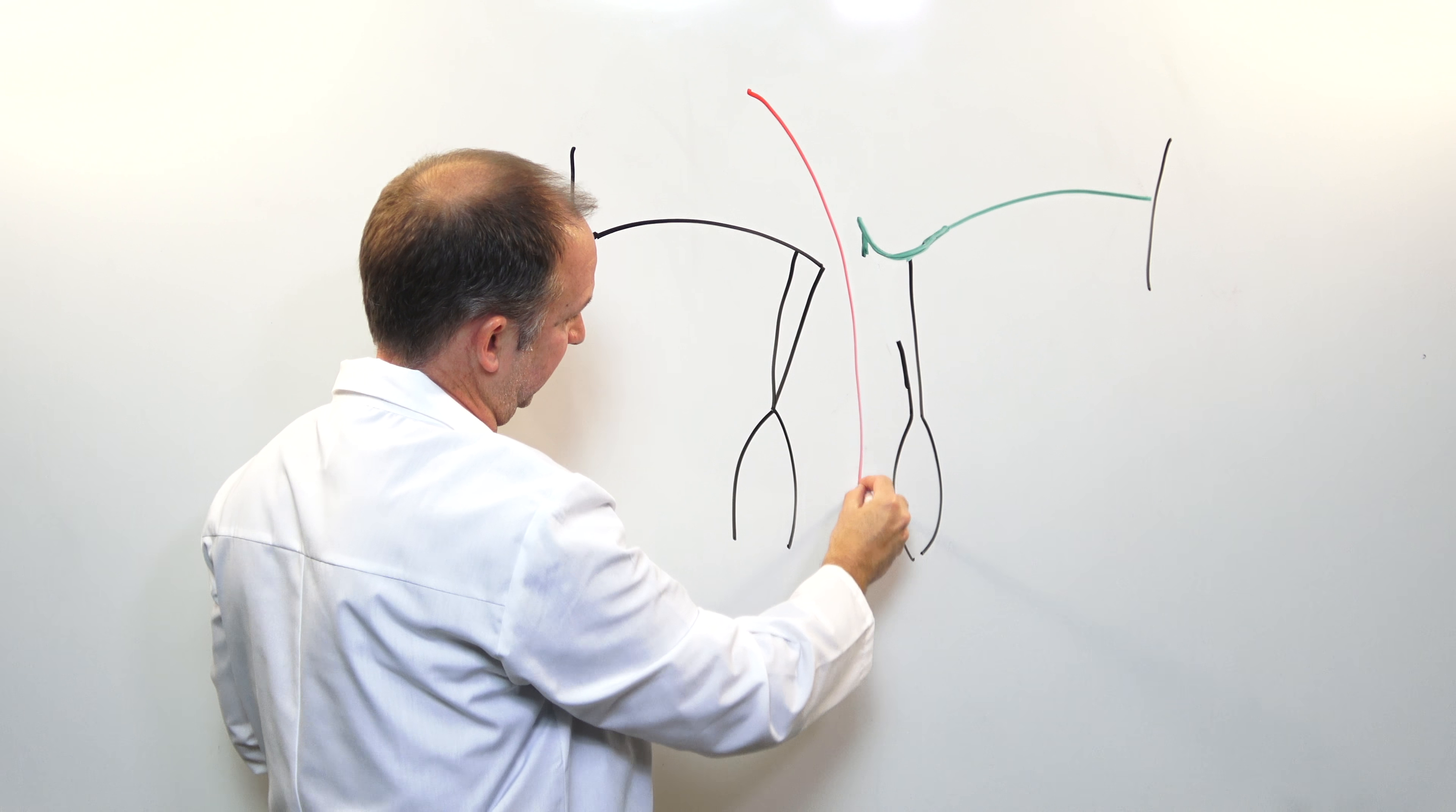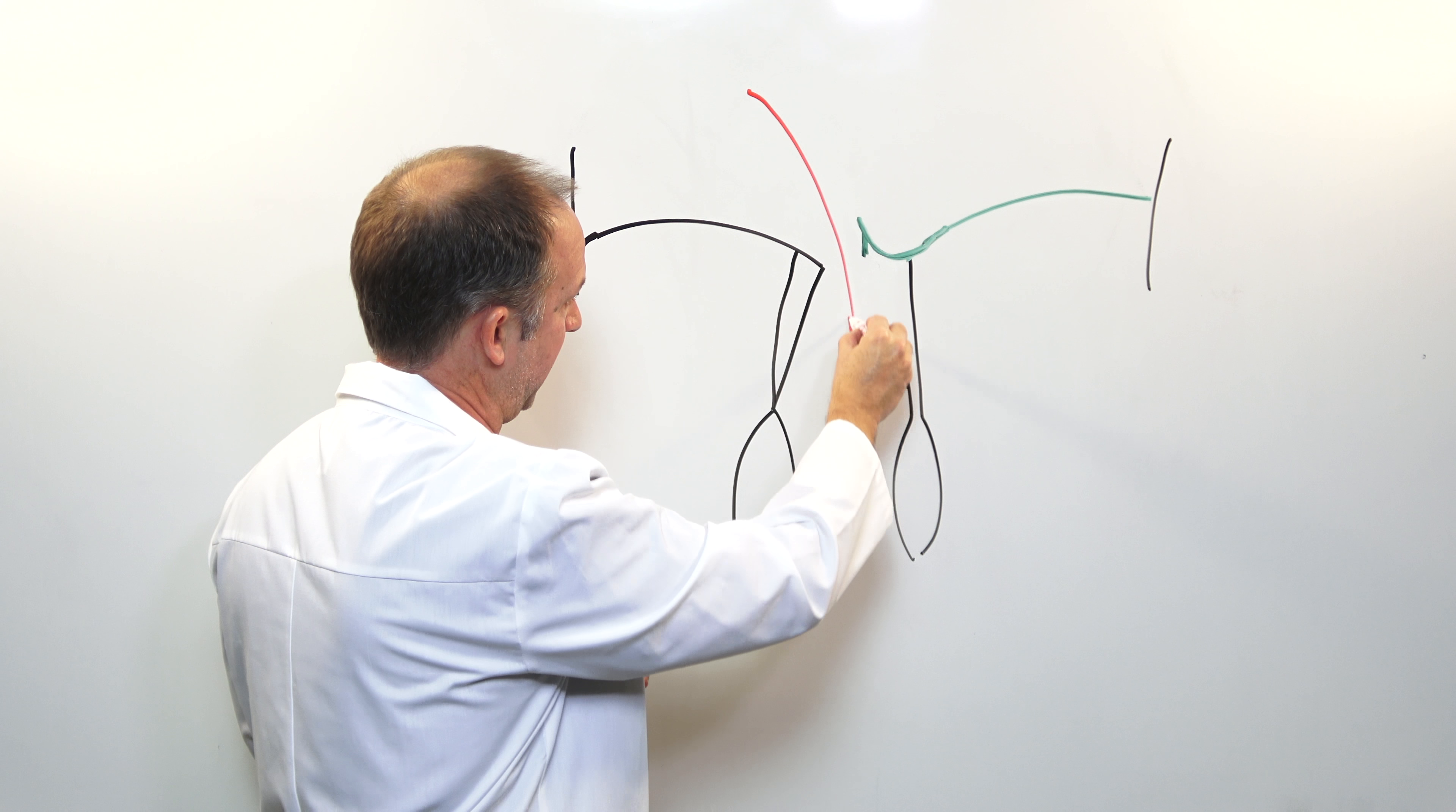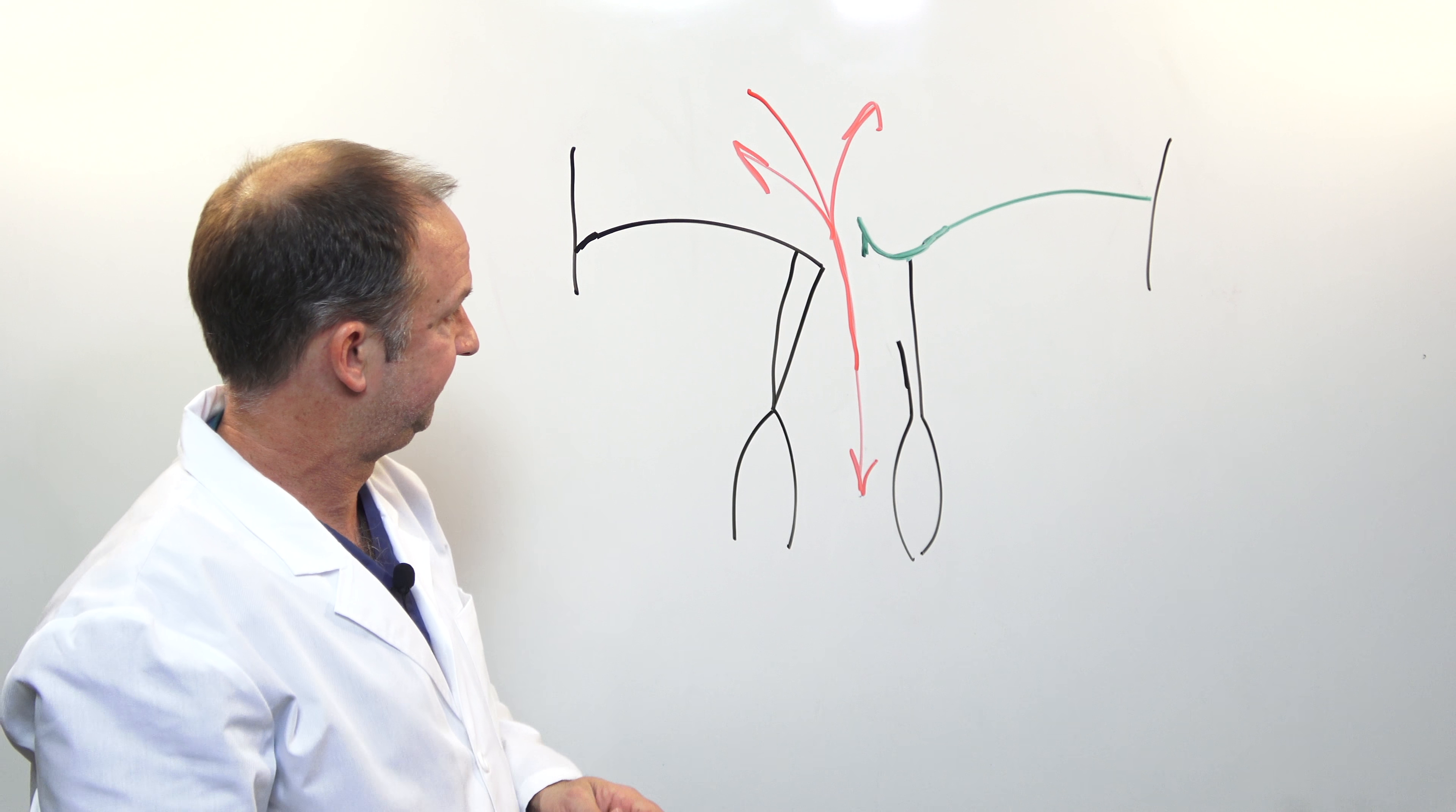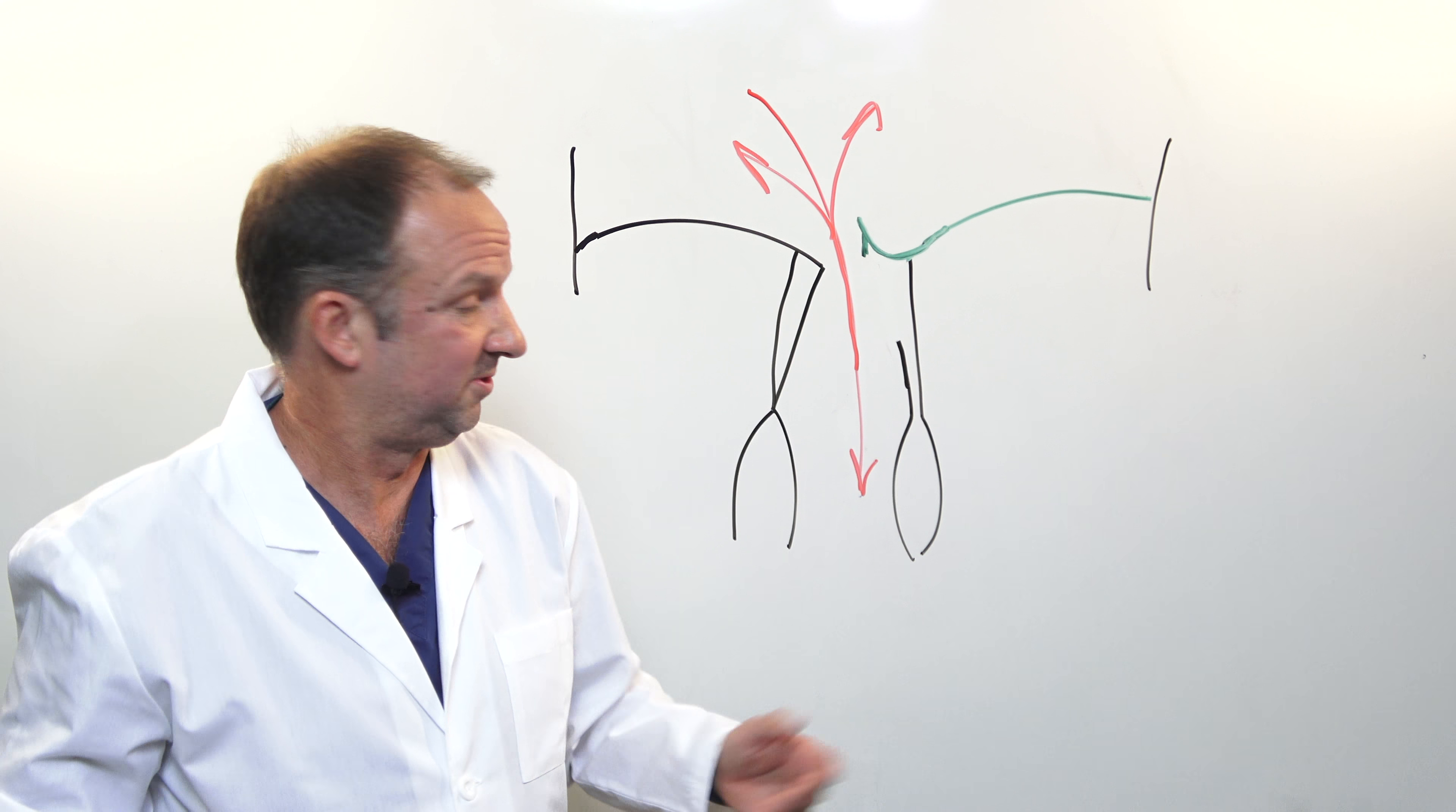instead of having blood moving in one direction, blood starts going backwards into the left atrium causing a mitral valve to leak. So if you pay close attention you've already figured out what the solution is.